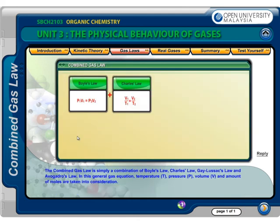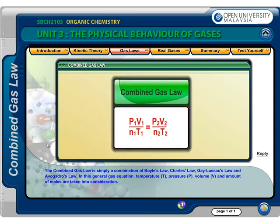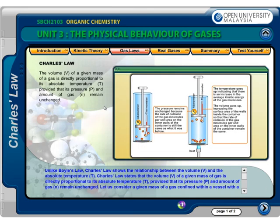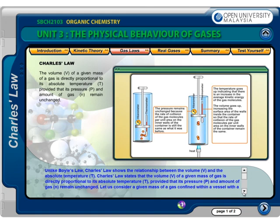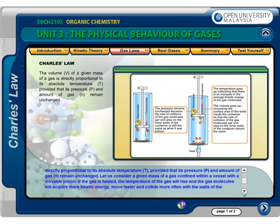The combined gas law is simply a combination of Boyle's Law, Charles' Law, Gay-Lussac's Law, and Avogadro's Law. In this general equation, temperature T, pressure P, volume V, and amount of moles N are taken into consideration. Unlike Boyle's Law, Charles' Law shows the relationship between the volume V and the absolute temperature T. Charles' Law states that the volume V of a given mass of gas is directly proportional to its absolute temperature T, provided that its pressure P and the amount of gas N remain unchanged.